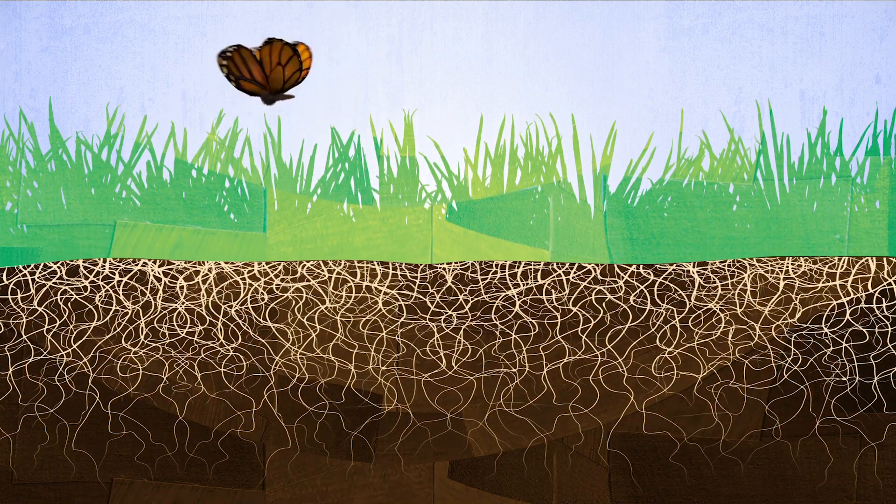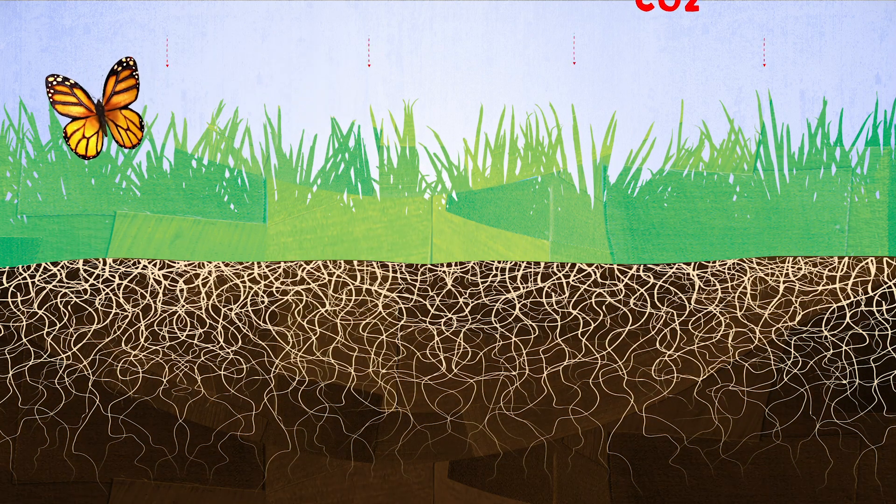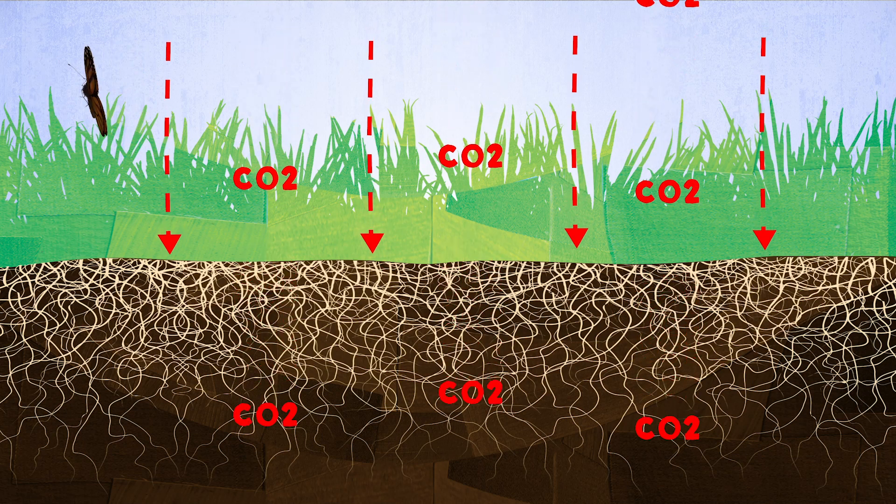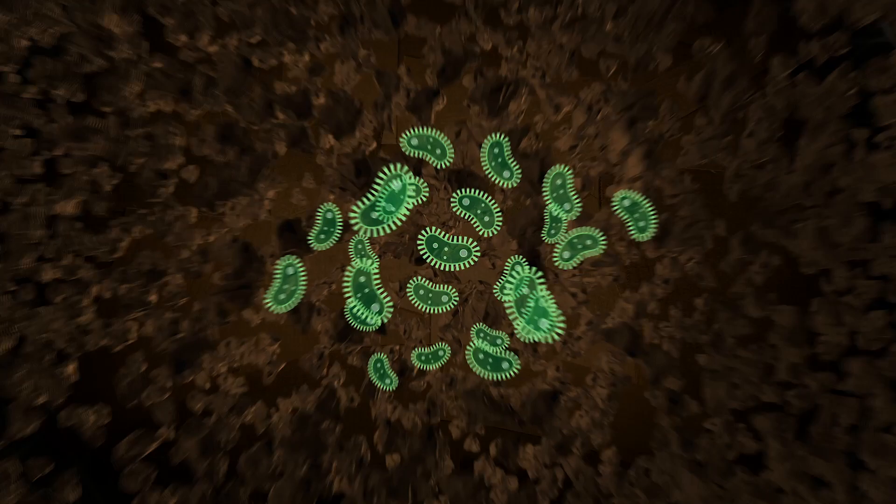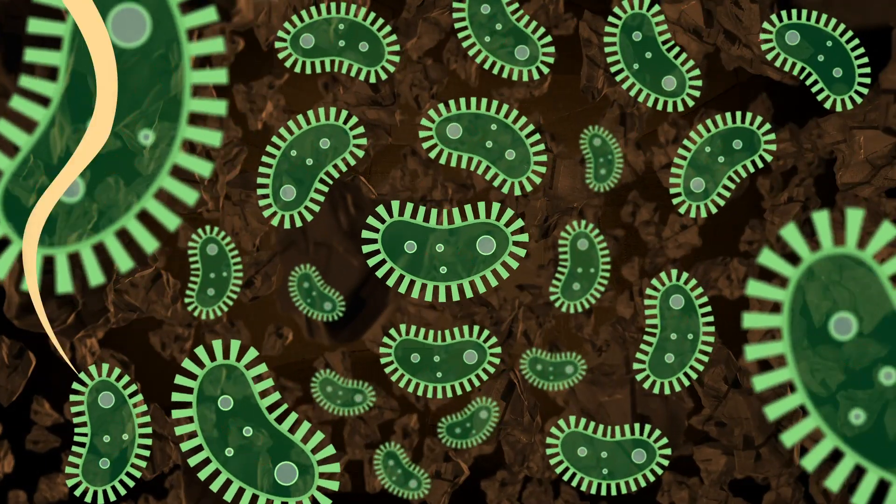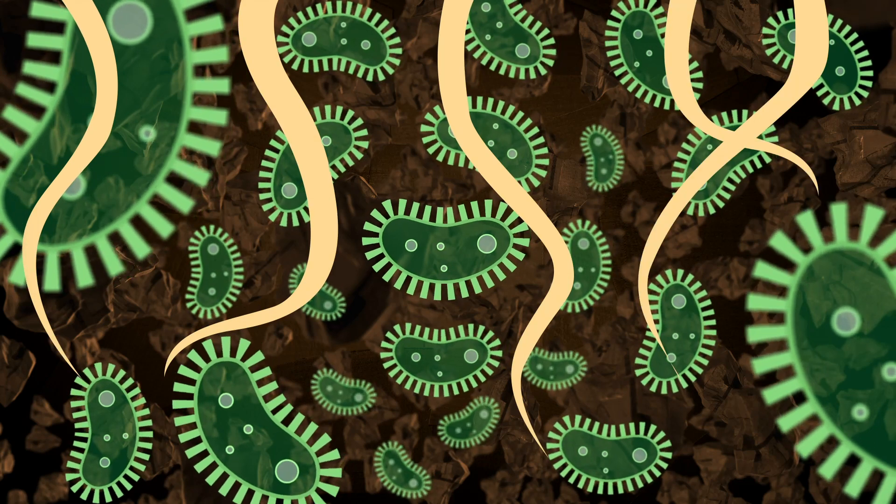When farmers grow healthier soil, they remove carbon dioxide, the primary gas responsible for global warming, from the atmosphere and capture and store that carbon in the soil by increasing living roots, microbial diversity, and stable organic matter.